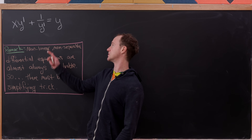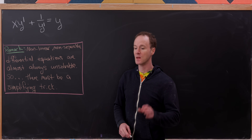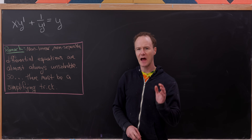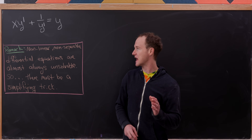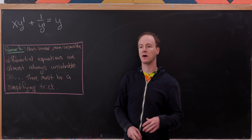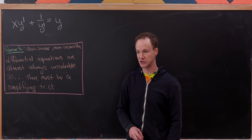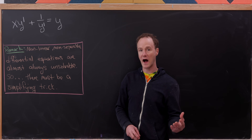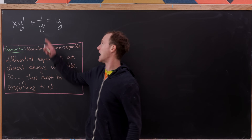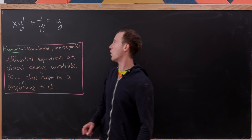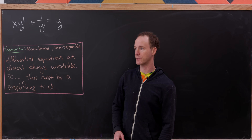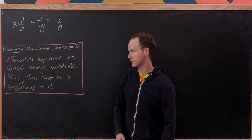The differential equation that we have is x times y prime plus 1 over y prime equals y. I'd like to first observe that this is a nonlinear differential equation. When we talk about linear versus nonlinear differential equations, we're talking about how y and its derivatives are built into the equation. The fact that we've got a 1 over y prime term — that's nonlinear in y prime, and that makes this a nonlinear differential equation.